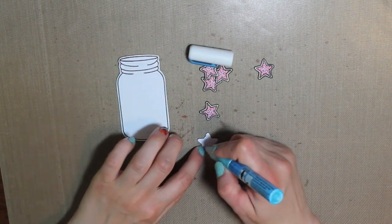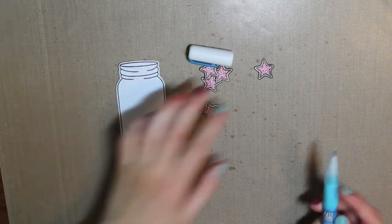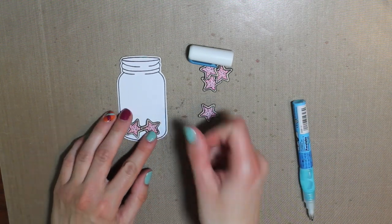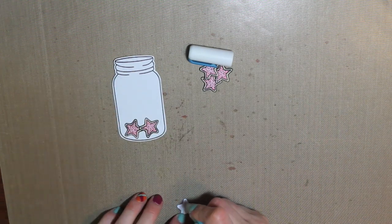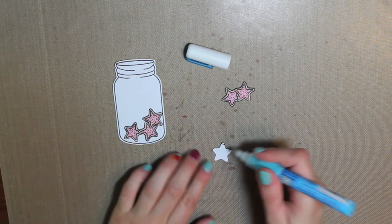So now I'm going to use my zig pen just to adhere the stars down into the jar. You could use any adhesive. You just want to make sure that it's strong enough because I'm overlapping some of the images. So you just want them to be strong enough to actually stick and not pop off the card.